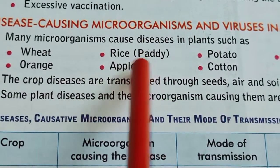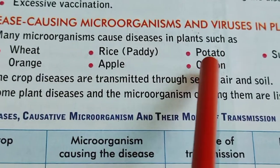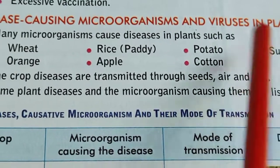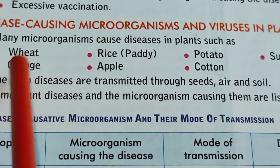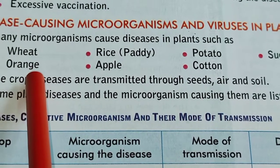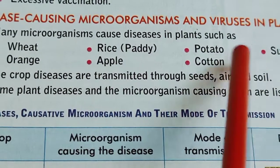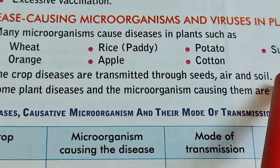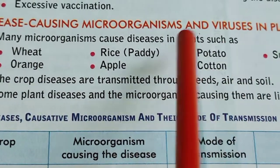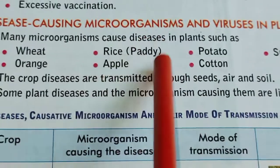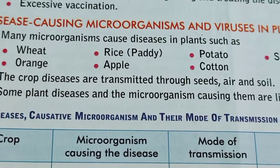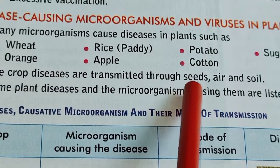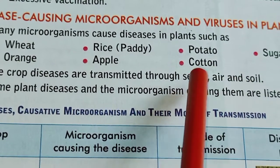For example, paddy, wheat, vegetables like potato, sugarcane, orange and other citrus fruits, apple, and even the fiber-yielding plant cotton — all types of plants may get infected by different types of microorganisms while they are in the field. Crop diseases are mainly transmitted through three media.